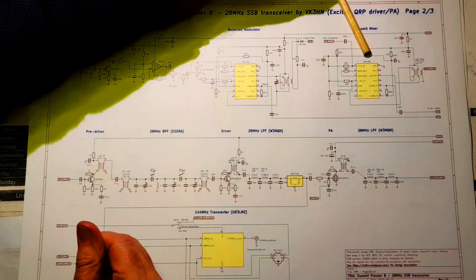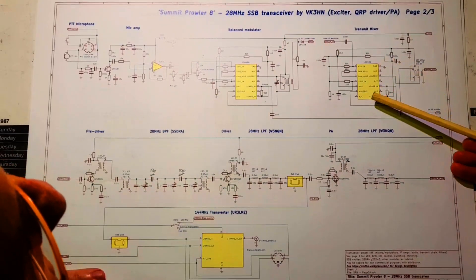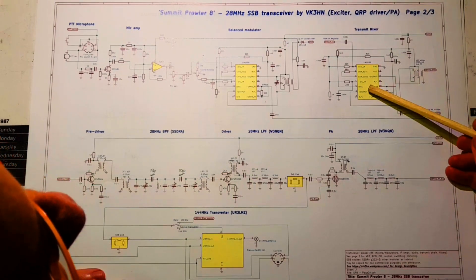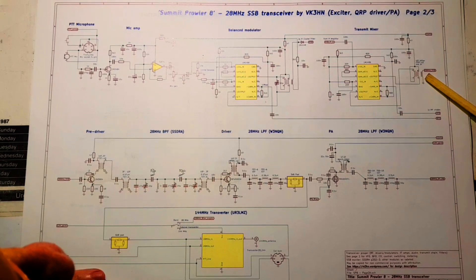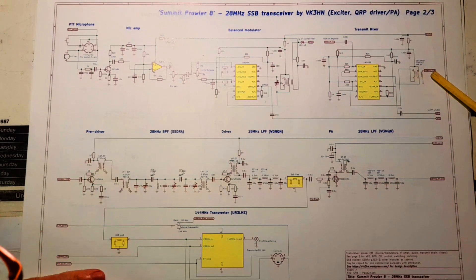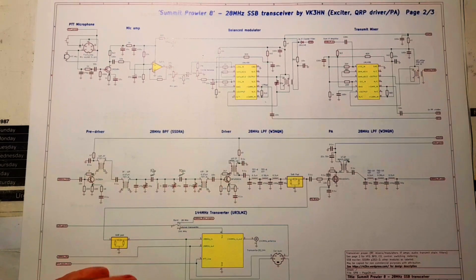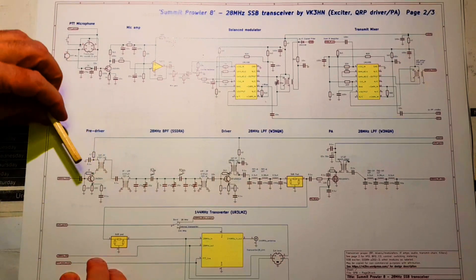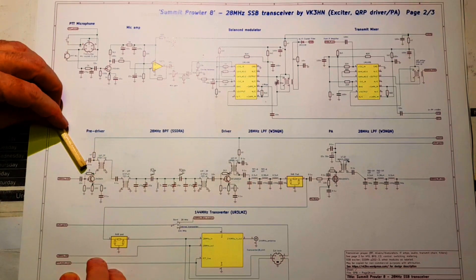Which is another 1496. The output of the transmit mixer is now on 28 MHz. It's the VFO on 37 MHz coming in here. And the 28 MHz single sideband signal coupled out of this tri-filer output transformer. It's pretty low level at this point.